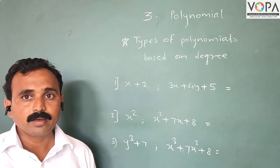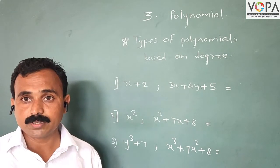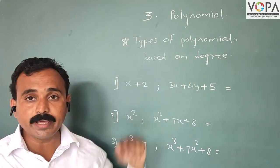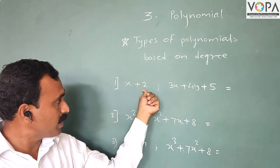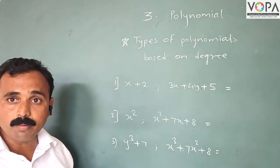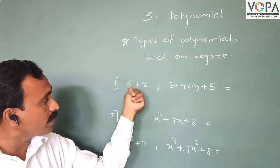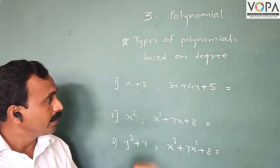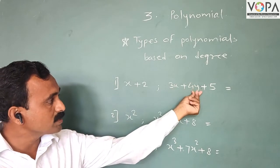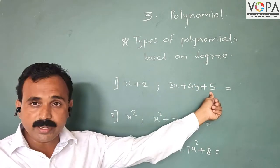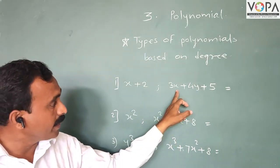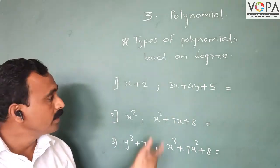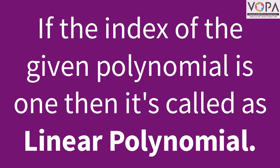Before we looked at types of polynomials based on terms — monomial, binomial, and trinomial. Now here are types of polynomials based on degree. First example: x plus 2. Here there are two terms, so it is a binomial, but the highest index of both terms is 1. Therefore it is called a linear polynomial. Second example: 3x plus 4y plus 5. There are three terms, and the index of each term is 1, 1, and 0. The highest index is 1, therefore both polynomials are linear polynomials.